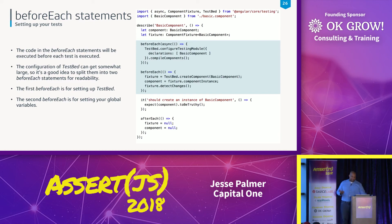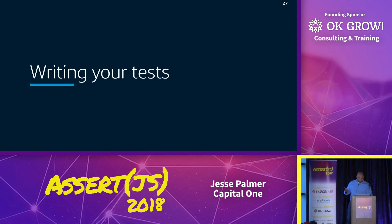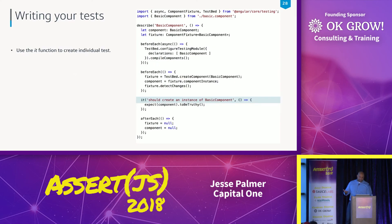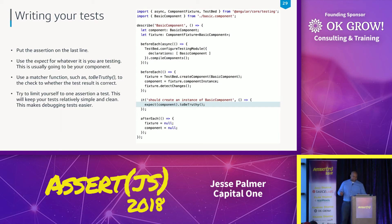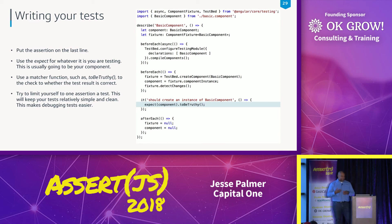Now we'll get into writing your tests. Use your it statement to create individual tests, and put your assertion on the last line. Use expect for what you're checking, then a matcher function — in this case, toBeTruthy. Generally, you want to limit the number of assertions per test. Sometimes I see five or six, which makes it really confusing and hard to debug. Sometimes a test may need two, but keep it minimal.